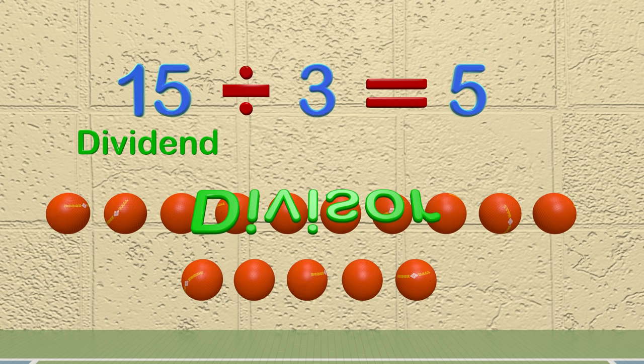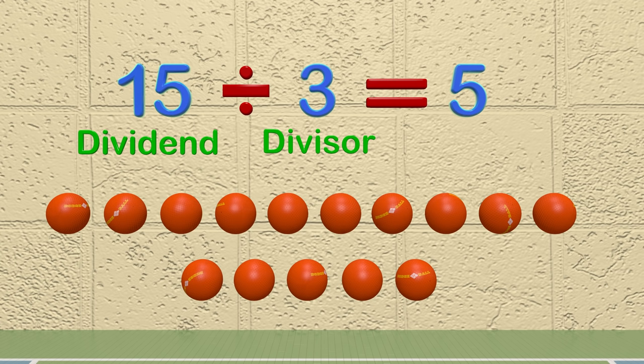The number 3 in the problem is called the divisor. This is the number we are dividing by. The divisor takes the dividend and breaks it into smaller groups. In this problem, let's say we have three kids that want to share the 15 balls. The 3 in the problem is the divisor.